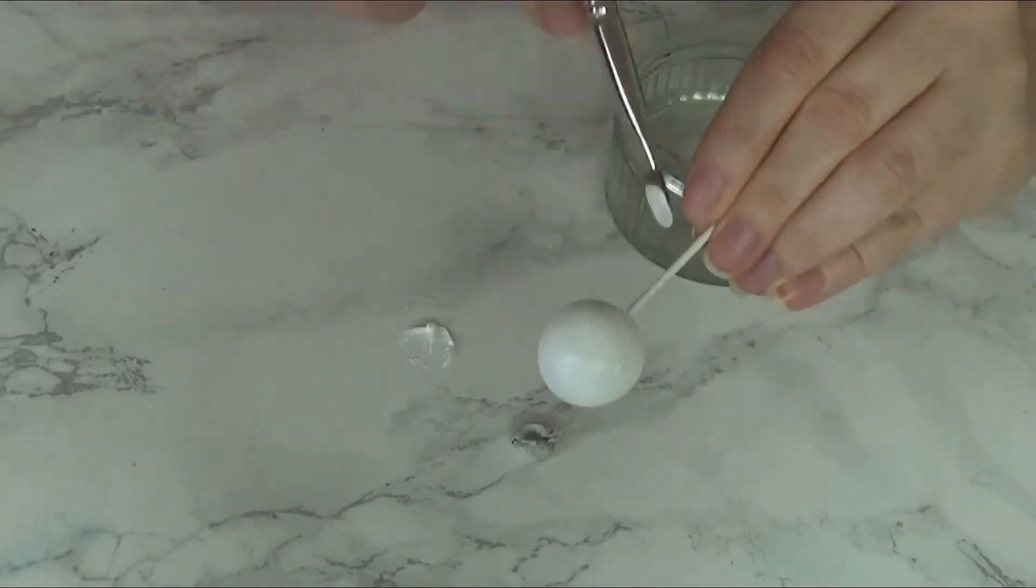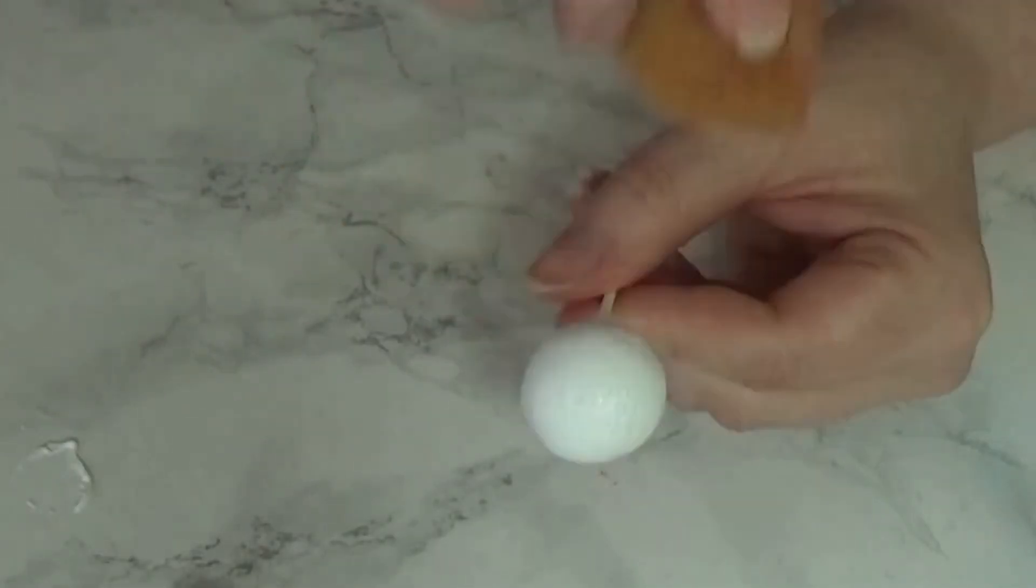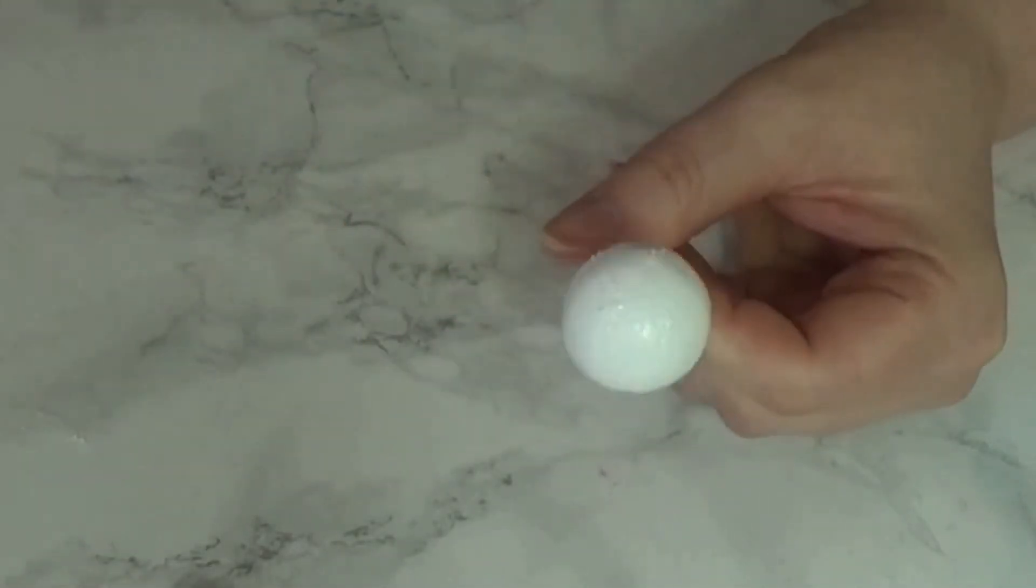Then you just want to paint your eyeball white just to prime it. Yes, I know the polystyrene ball is already white, but you still want to prime it. Leave that to dry.